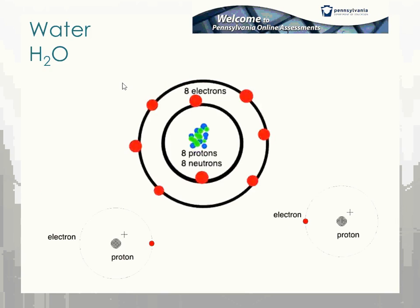Just a refresher from chemistry: water consists of two hydrogens and one oxygen atom. Oxygen has an atomic number of eight — eight protons, eight electrons in a neutral atom, and eight neutrons in the nucleus. The first shell can hold up to two electrons and each subsequent shell up to eight, so oxygen has two electrons in the first shell and six in the second.